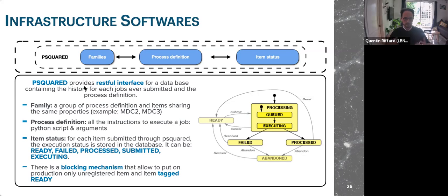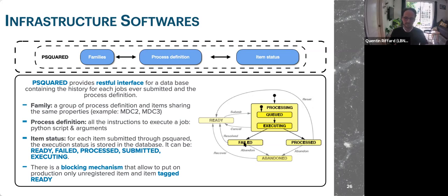P-squared provides a RESTful interface for a database containing the history of every job ever submitted. A job goes through states: sent, processing, in queue, executing, then processed — meaning success — or failed. There are ways to reset a failed status, and you cannot resubmit a processed job or a failed job without first resolving its failed status. This blocking mechanism prevents accidentally resubmitting jobs that are just failing.